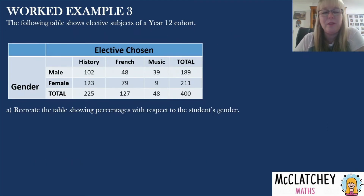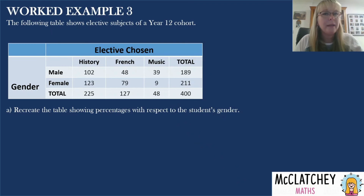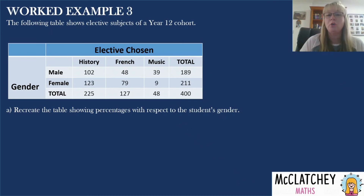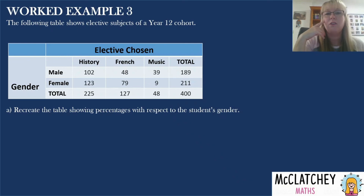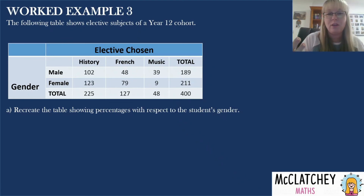Worked example three: we are looking at the elective subjects a Year 12 cohort has chosen, broken down by gender. Some students chose history, some chose French, and some chose music. We need to recreate this table as a percentage frequency table with respect to the students' gender. 'With respect to gender' means the totals we divide by are the gender totals, not the subject totals — so every percentage shows what proportion chose each subject out of all males or all females.